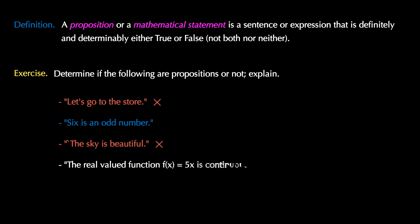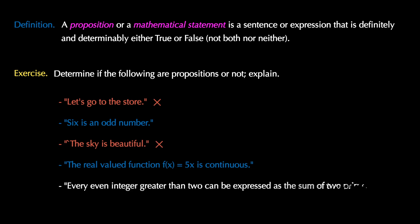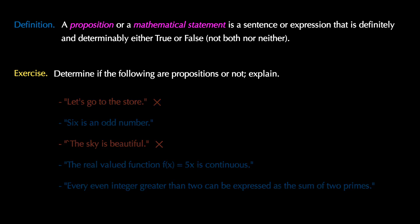The real-valued function f(x) = 5x is continuous — this is a proposition, because as long as we know the definition, we can determine if it's true or false. And finally, every even integer greater than two can be expressed as the sum of two primes — this is a mathematical proposition, even though currently we actually don't know the truth value of this proposition.